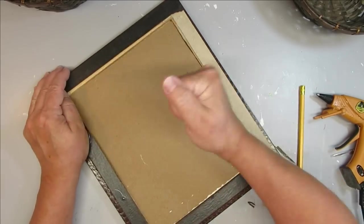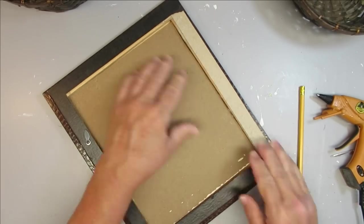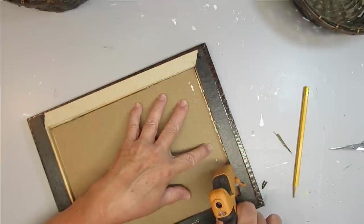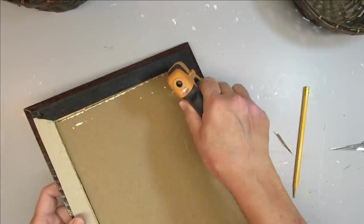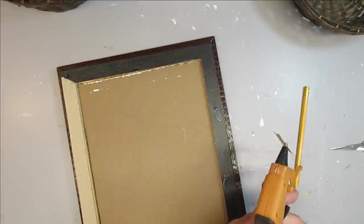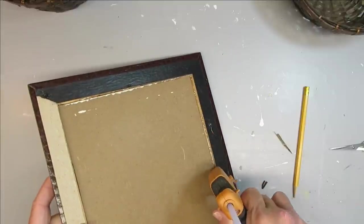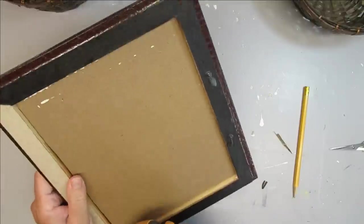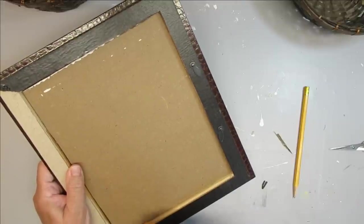Whenever I'm gluing a piece of board into a frame or the glass into the frame I like to put some extra hot glue on the top of it and then just really make it nice and thick so it comes in contact with the frame itself and the board or the glass.